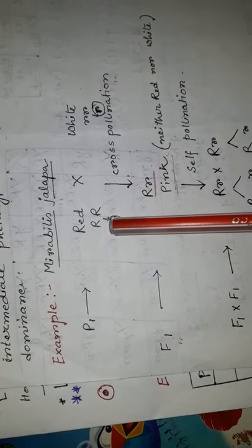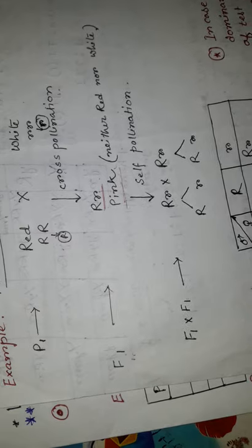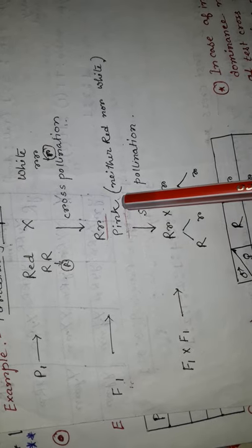Here I give one example of this deviation. A cross is done between two individual plants of Mirabilis jalapa — one is a red color flower producing plant and another one is a white color flower producing plant. Here red color is the dominant character. You know about what is dominant and what is recessive. In F1 generation, it produces a new plant which produces a pink color flower. But according to Mendel's law, it should be a red color flowering plant.